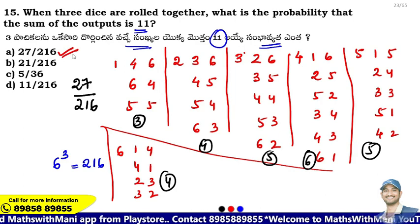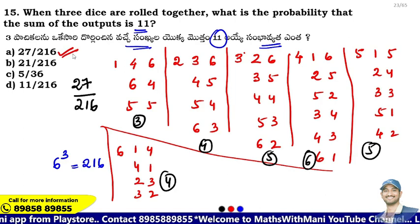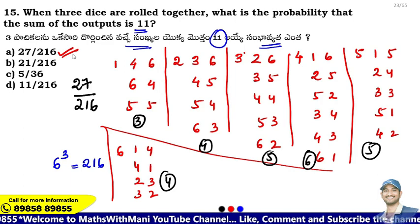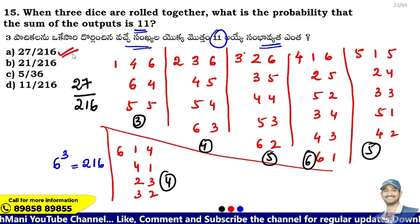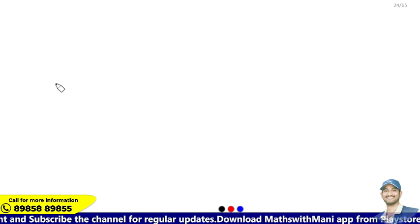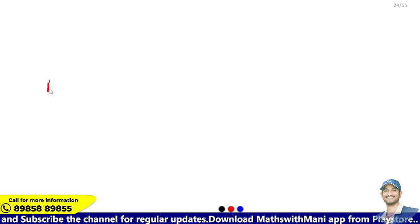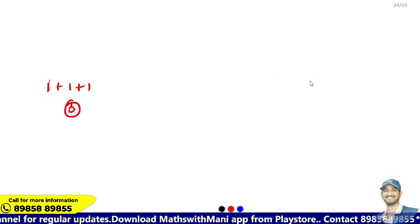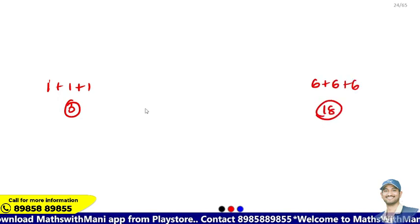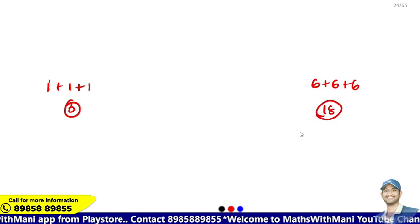Now, instead of doing this manually 10 or 12 times, there is a short trick. For 3 dice, the minimum value is 1+1+1 = 3, and the maximum value is 6+6+6 = 18. So the range is 3 to 18.